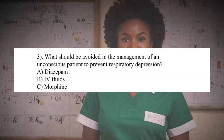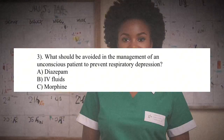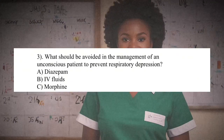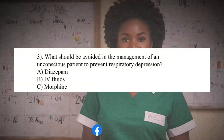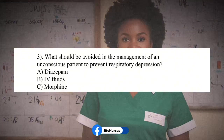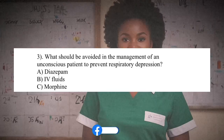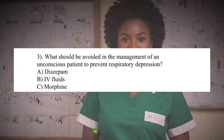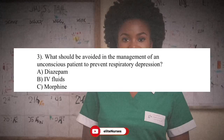Question 3: What should be avoided in the management of an unconscious patient to prevent respiratory depression? A. Diazepam. B. IV fluids. C. Morphine. Answer: C. Morphine. Rationale: Morphine should be avoided as it depresses respiration and interferes with the level of consciousness.